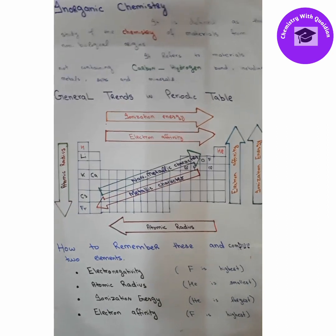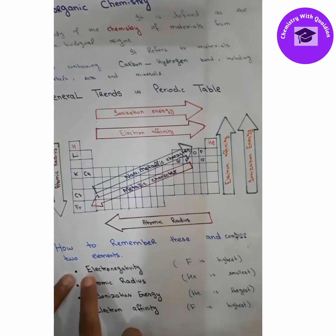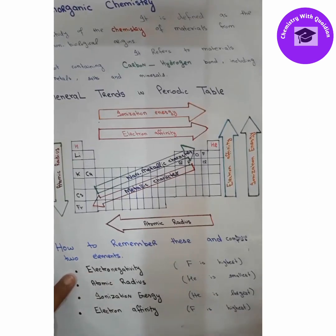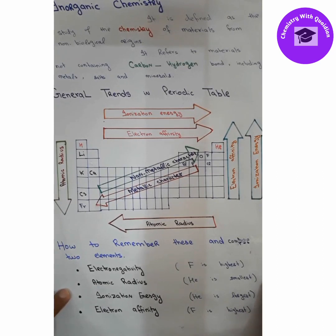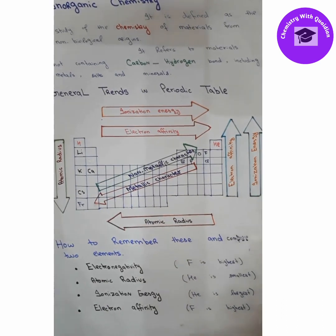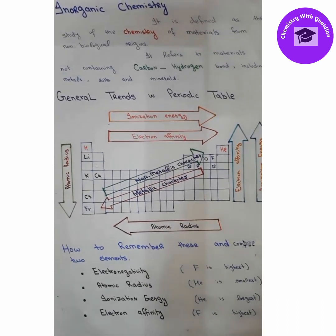So the general trends are: electronegativity increases from left to right in the periodic table; atomic radius decreases from left to right; ionization energy increases from left to right; and electron affinity increases from left to right. There are some exceptions, but these mostly lie in the lanthanide, actinide, and 3d series. The general concept of the trend, however, is as described.